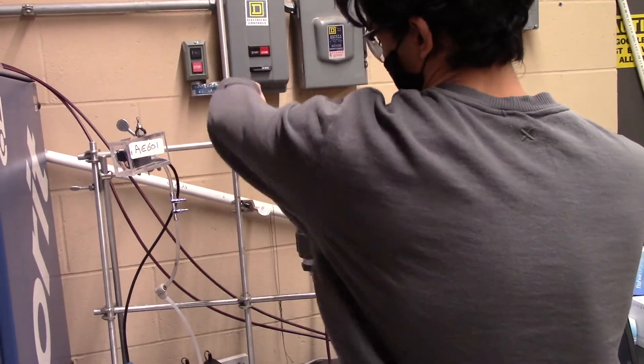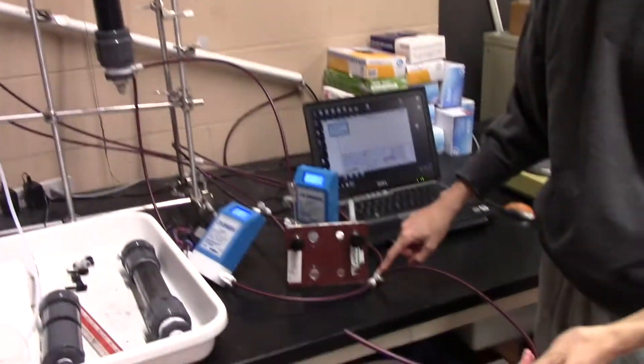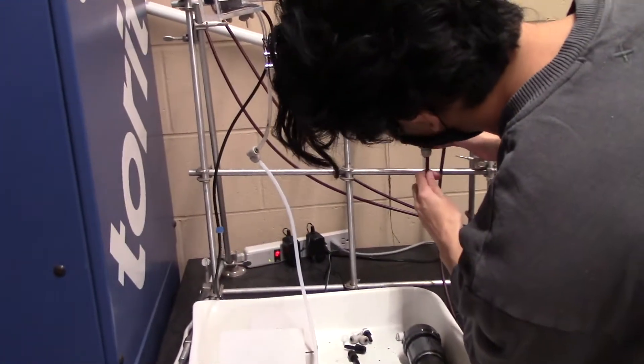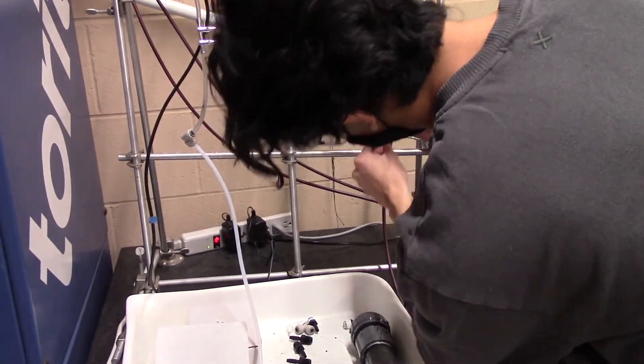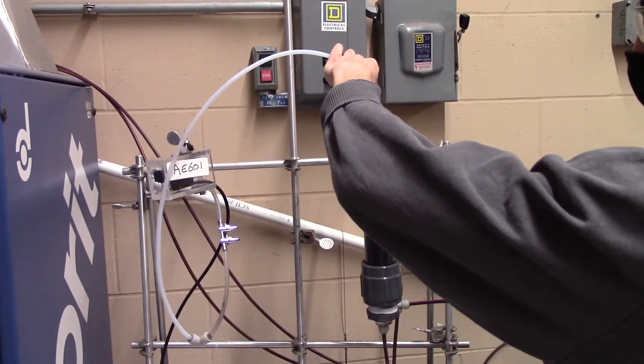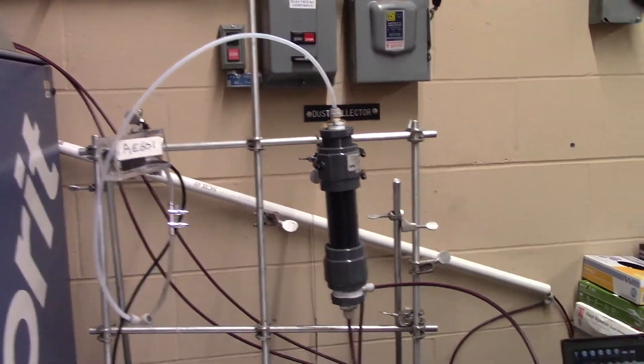Next, securely fasten the column. Once this is done, take the tubing exiting the three-way valve and attach it to the bottom of the column to flush it through with nitrogen gas. Then take the sensor tubing and attach it to the top of the column for the computer to receive the adsorption data.